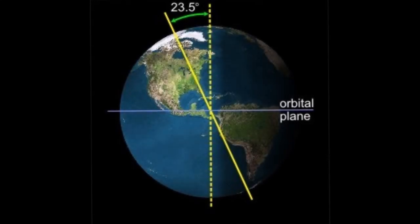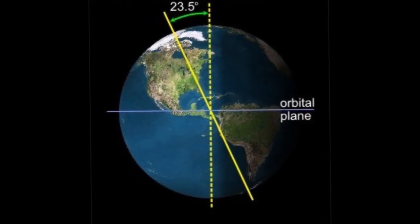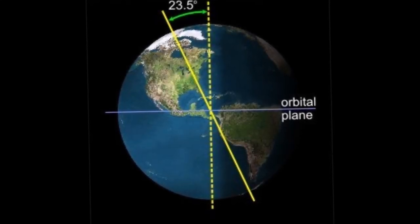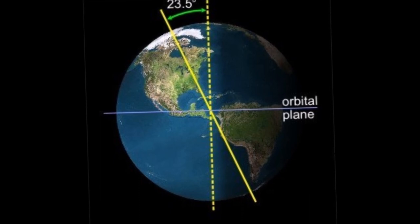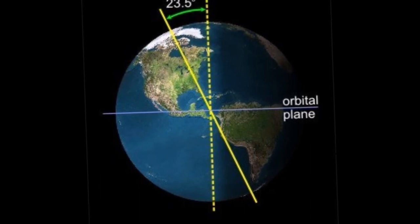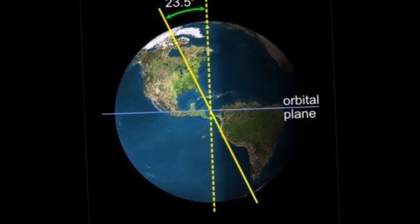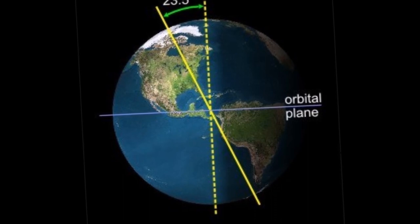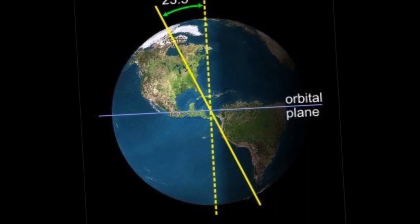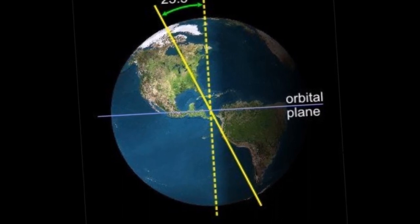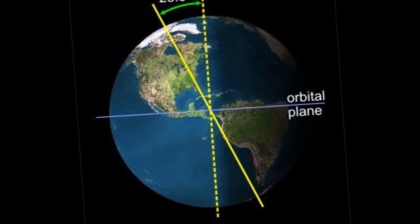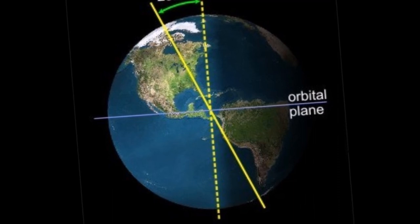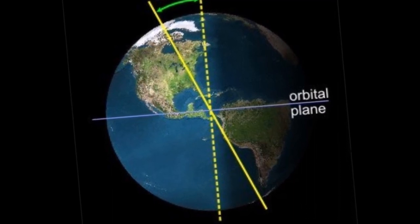The axis of rotation of the Earth deviates, and these are the three reasons. The average displacement was around 4.2 inches per year during the past century, and scientists believe that the process may be accelerating. During the 20th century, the axis of rotation of the Earth accumulated a displacement of more than 10 meters.